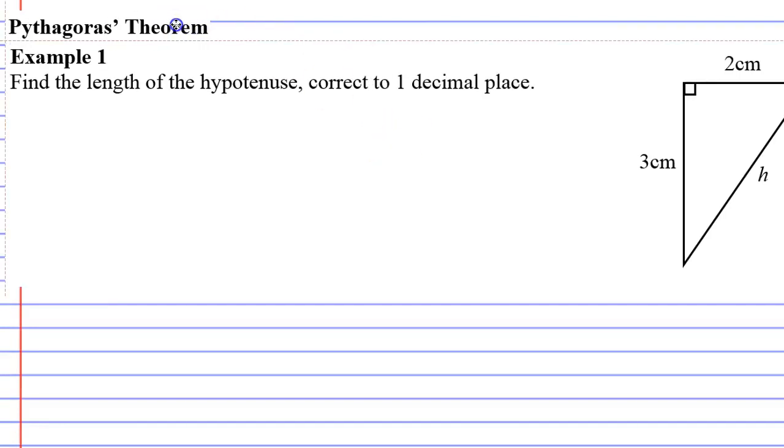Pythagoras Theorem, Example 1. It wants you to find the length of the hypotenuse correct to one decimal place for this triangle.